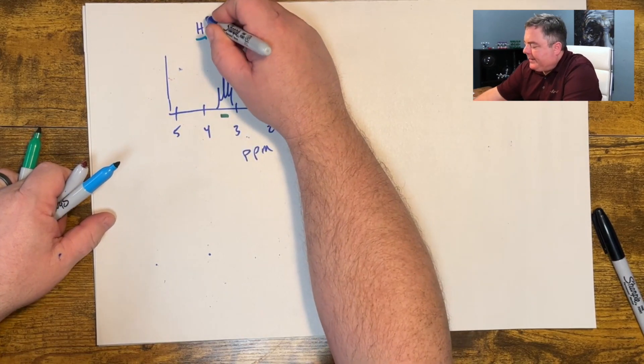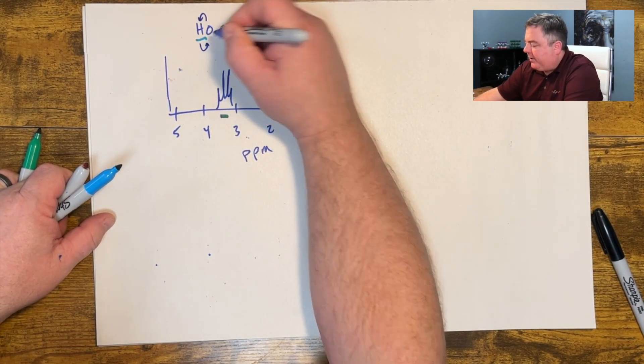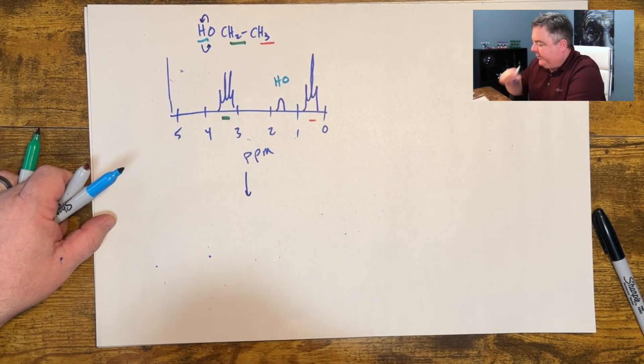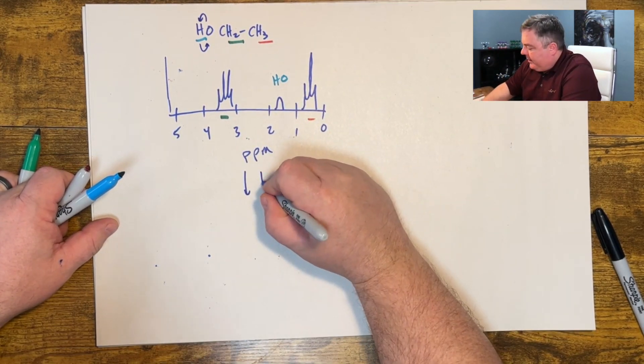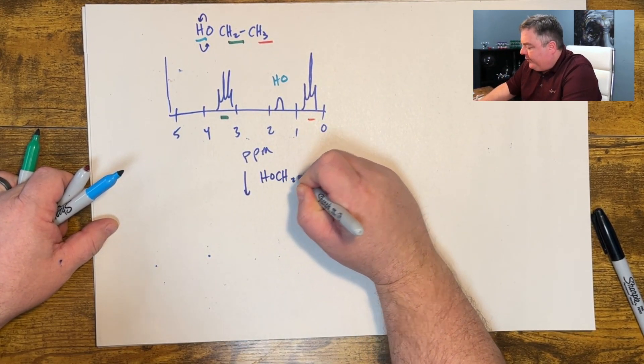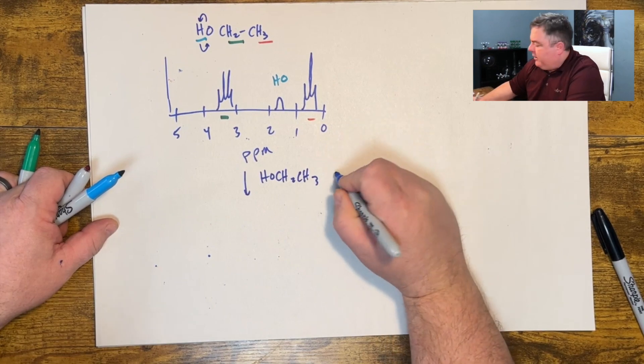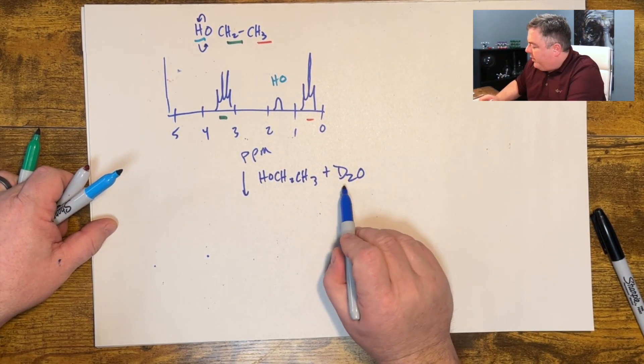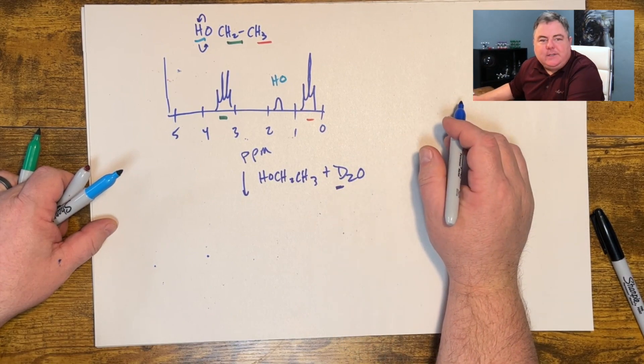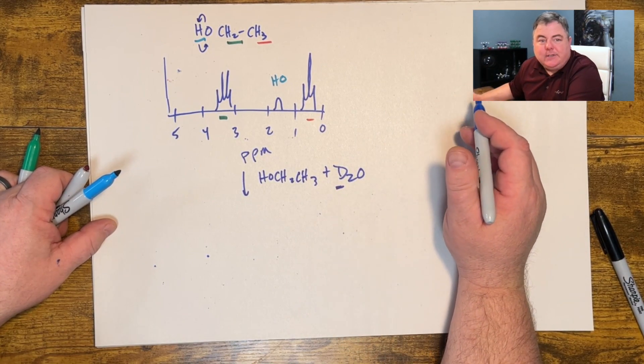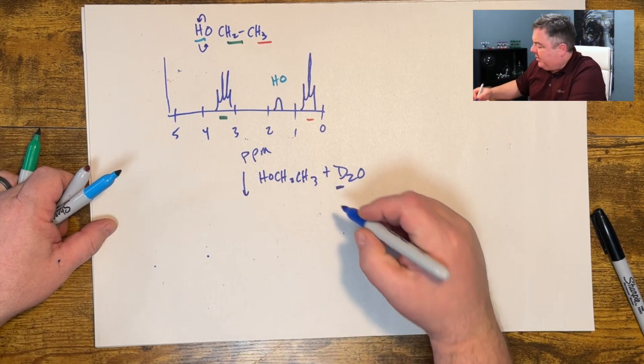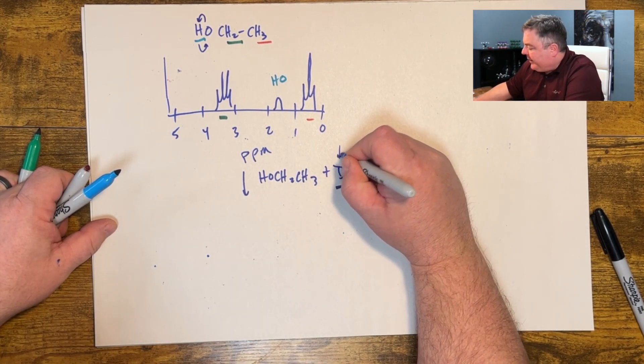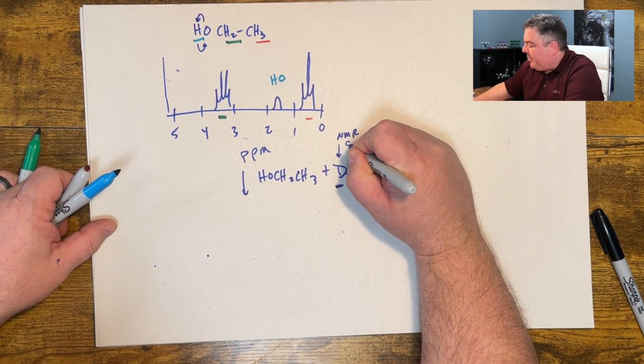Now one trick, because this hydrogen falls on and off, comes on and off, is you can do this little trick. You can take your ethanol, take your NMR tube, and add heavy water. This is water where instead of regular hydrogens it has heavier hydrogens, hydrogen-2 or deuterium, and these are NMR silent, they do not show up in the NMR.